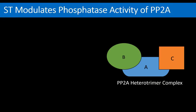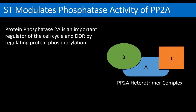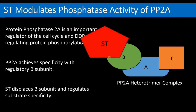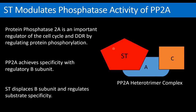The characteristic function of small T is the modulation of protein phosphatase 2A, or PP2A. PP2A is an important regulator of the cell cycle and the DNA damage response through regulation of protein phosphorylation. PP2A typically exists as a heterotrimer with an A scaffold subunit, a C catalytic subunit, and a B regulatory subunit. Small T mimics a B regulatory subunit, directing PP2A activity towards some substrates and away from others.